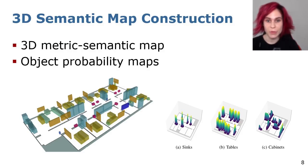These are the outputs of our mapping algorithm. We obtain a 3D metric semantic map and object probability map based on the statistical analysis we discussed previously.